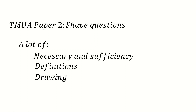We're going to be looking at Tumuwa paper 2 shape questions in this video. There's going to be a lot of necessary insufficiency stuff, a lot of definitions of quadrilaterals, various different quadrilaterals and triangles. And of course there's going to be a lot of drawing, because to do this necessary insufficiency stuff we're going to find counterexamples, which is going to be through drawing.